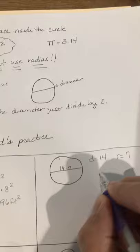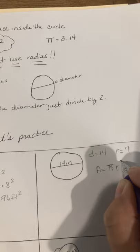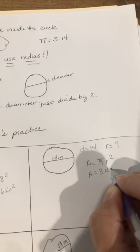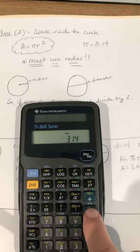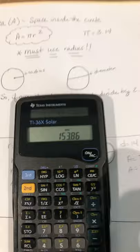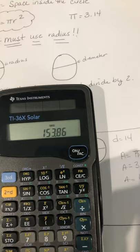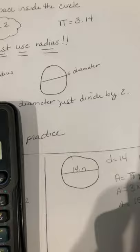So area equals pi r squared. Area equals 3.14 times 7 squared. So grab your calculator. So 3.14 times 7 squared equals 153 and 86 hundredths. And of course that's inches, so it's inches squared.